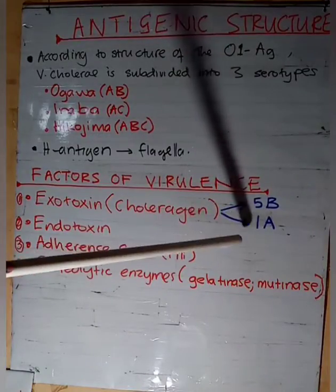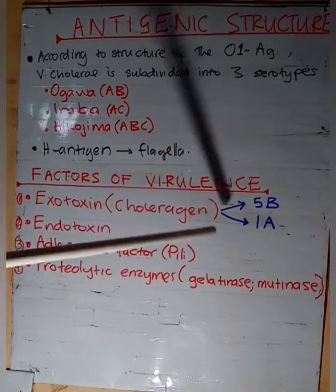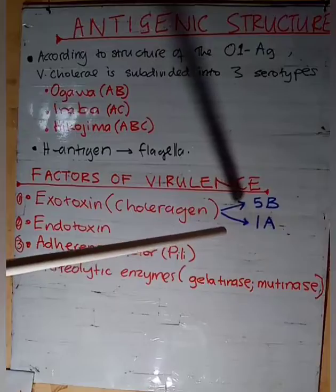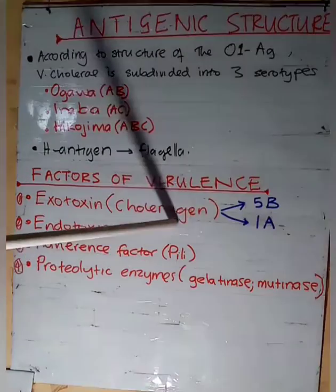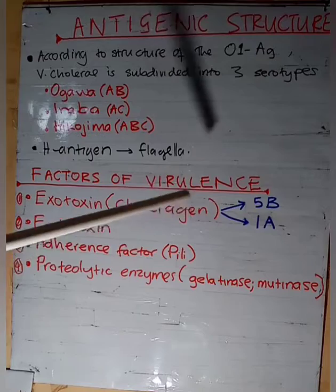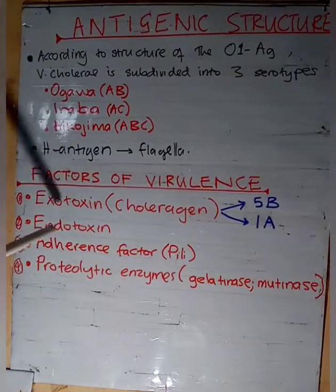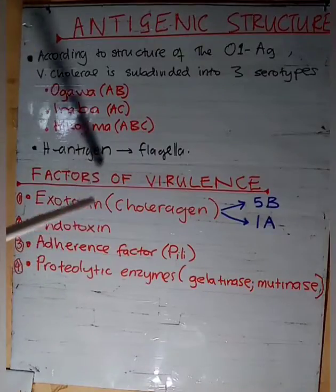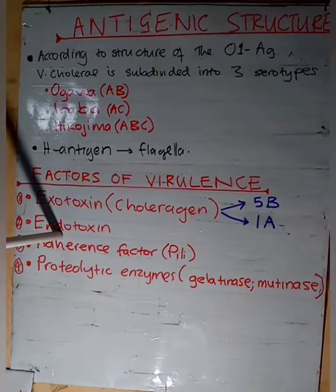Overstimulation of adenylate cyclase leads to an increase in cyclic AMP, causing loss of ions — sodium and chloride — into the intestinal lumen. Water follows sodium, resulting in massive dehydration and diarrhea. The second virulence factor is the endotoxin, which is a polysaccharide O antigen. It has no role in the pathogenesis of cholera but is responsible for immunity induced by killed vaccines.